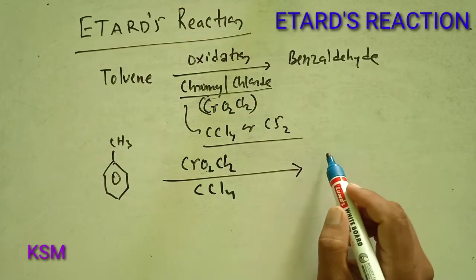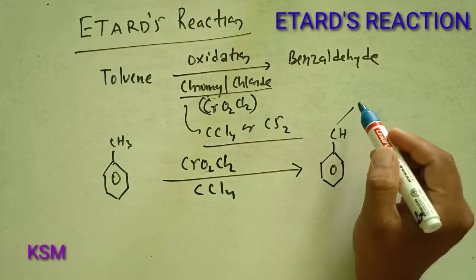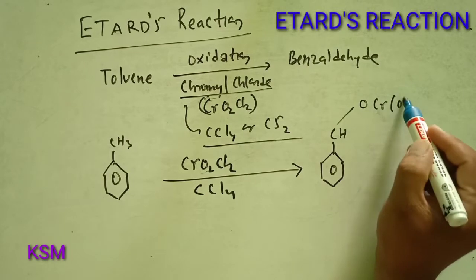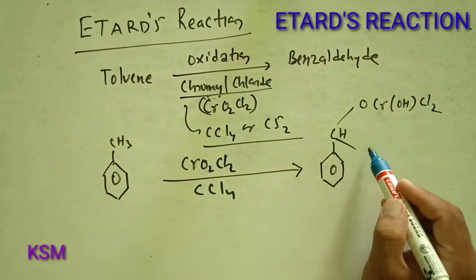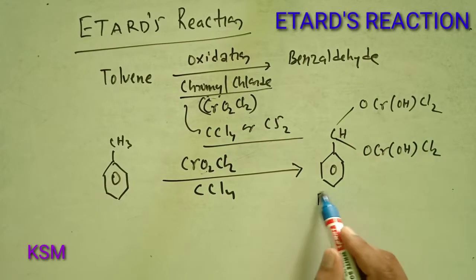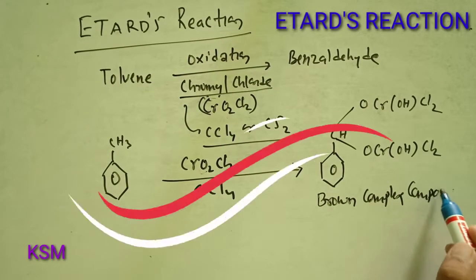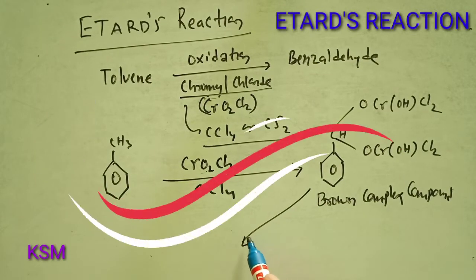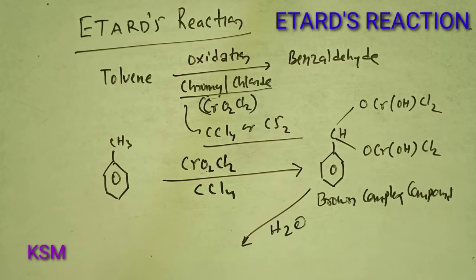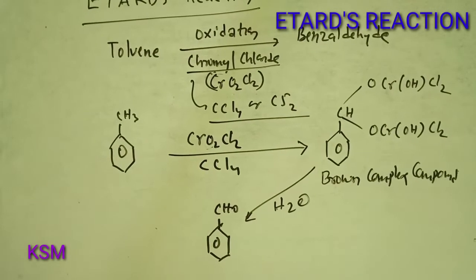This leads to the formation of a complex compound: a benzene ring to which a carbon is attached, bonded to CrO(OH)Cl₂ — a brown complex compound is formed. Then, after it reacts with a water molecule, it finally leads to the formation of benzaldehyde, where the CHO group is attached to the benzene ring.